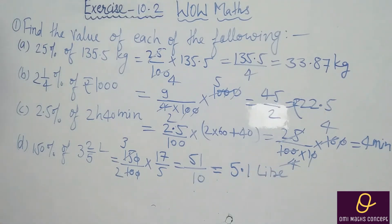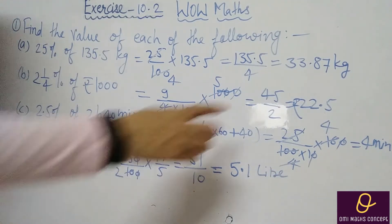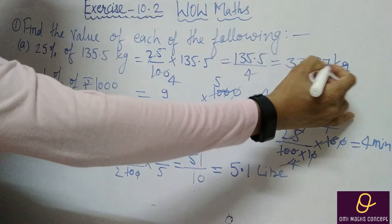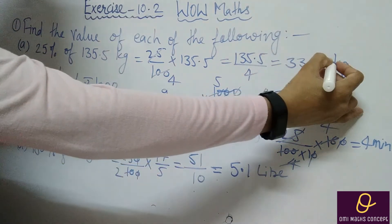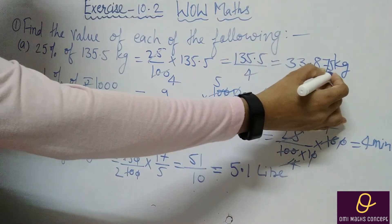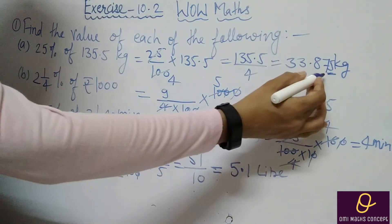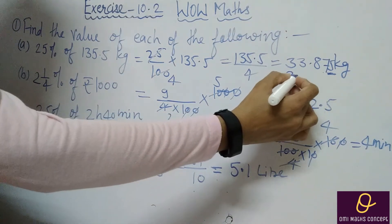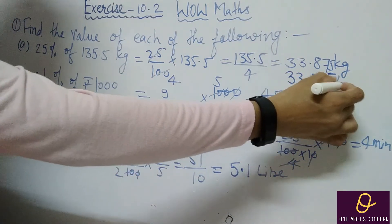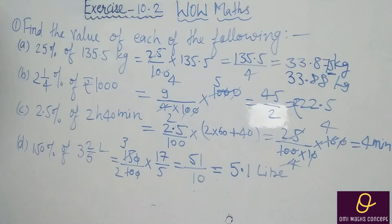This is your answer: 5.1 litres. And if we extend it to 3 decimal places we continue the division. Since the next digit is 5 or more than 5, we round up the digit. So the answer is 33.88 kg.